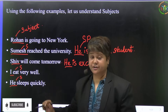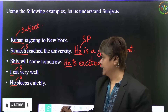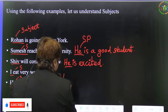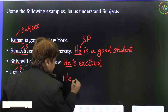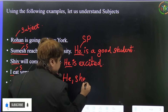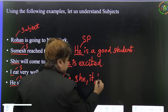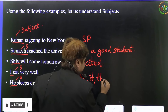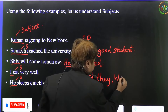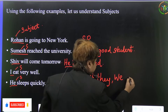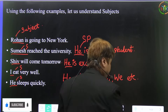'I eat very well' — here 'I' is a subjective pronoun. 'He sleeps quickly' — so he, she, it, they, we, etc. are all subjective pronouns.